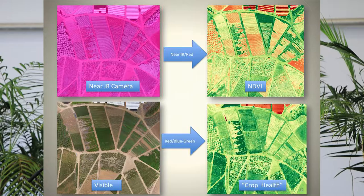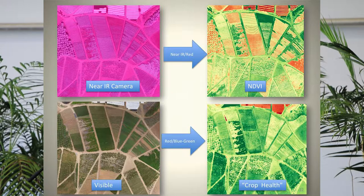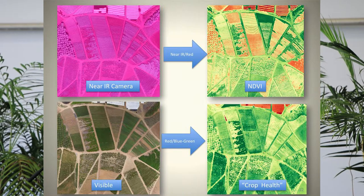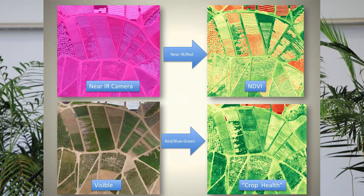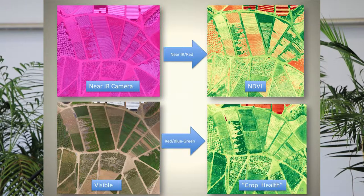You can get a lot of pretty pictures and false-colored images, but what they really mean is still to be determined in some cases. What I'm comparing here is the near-infrared image — shown in pinkish color through a special filter — measuring the near-infrared and reddish-magenta channel. Processing that produces the NDVI image, where the top of the field here appears healthier than the bottom. That's the NDVI analysis.